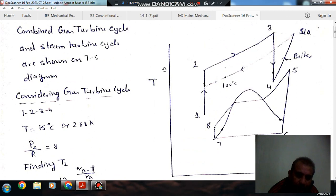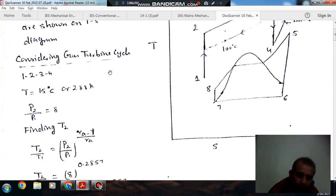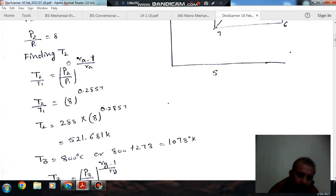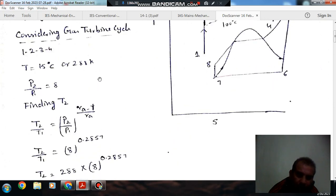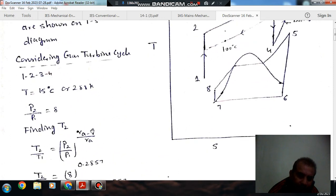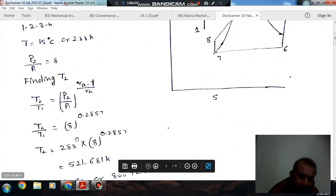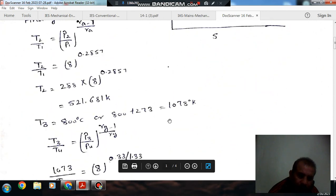First of all considering the gas turbine cycle. Considering process 1-2, T1 is here 15°C or 288 K and pressure ratio is 8. So from this you can find T2 = 517.65 K.